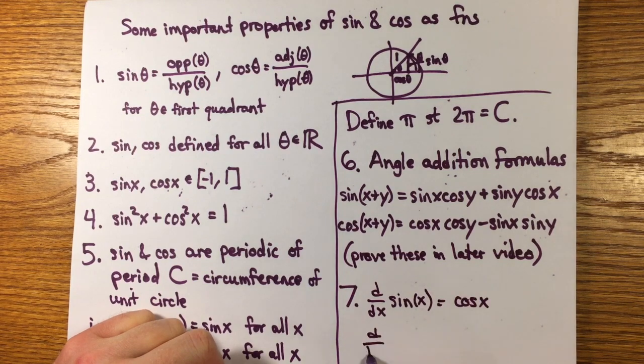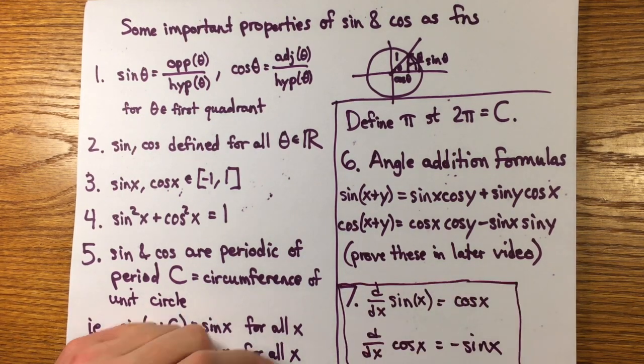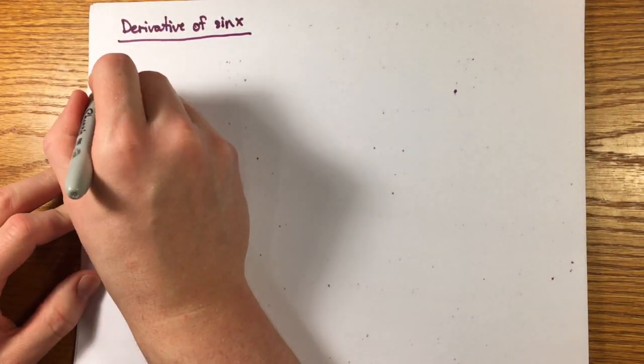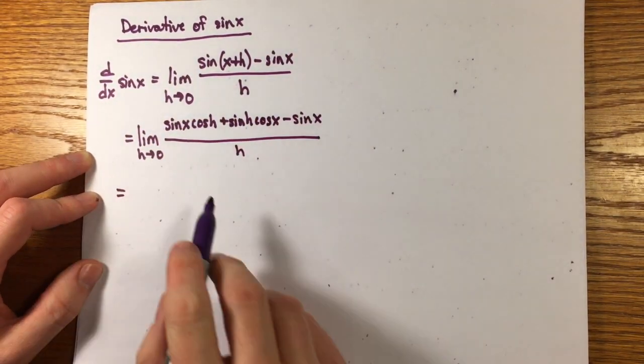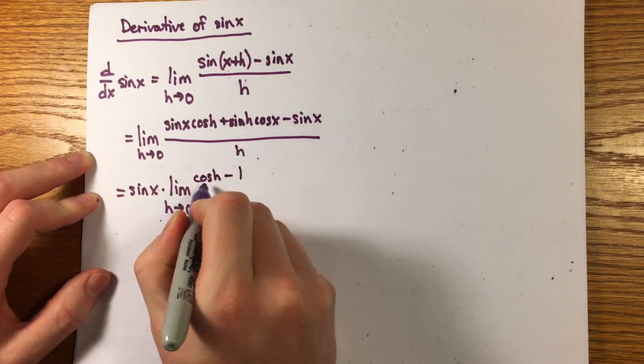Finally, the trig functions are differentiable and the derivative of sine is cosine. That's the property I want to focus on. Using the definition of the derivative and the angle sum identity, the derivative turns out to be a linear combination of sine x and cosine x, with coefficients expressed as limits we have to compute.